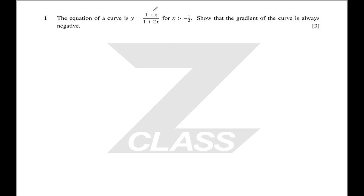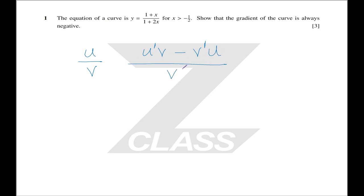The way you do that is: if you have a fraction u over v and you differentiate it, you get u prime v minus v prime u over v squared. That's your quotient rule. Prime means it's been differentiated, so u prime is differentiated u.